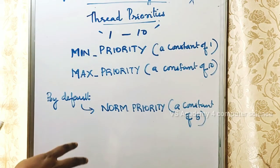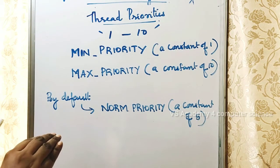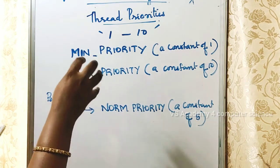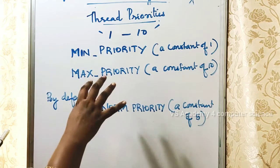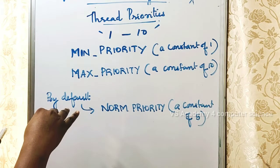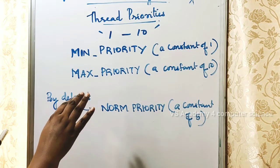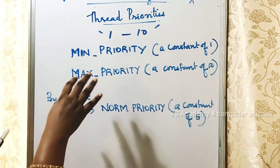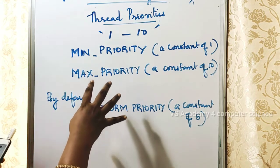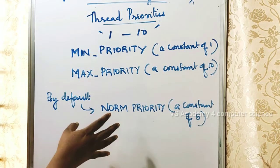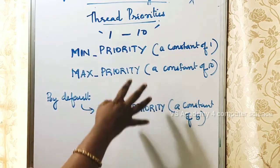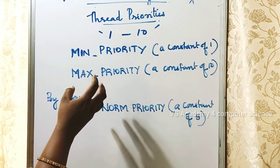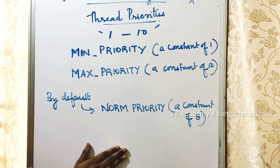A thread having the highest priority will be executed first when compared to a thread with the lowest priority. We cannot guarantee the exact order in which threads execute on every platform, but we can control thread priorities in our programming.